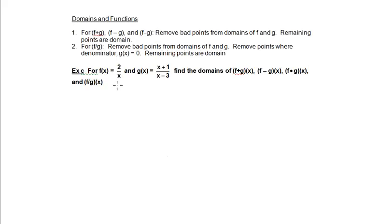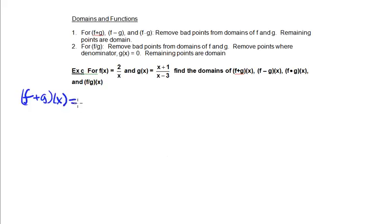We have two functions here and each of these two functions has a bad point in the denominator. Whatever points are making these functions bad in their original state are going to continue when we make a combined function. For example, the combined function f plus g of x will be f of x which is 2 over x, plus x plus 1 divided by x minus 3.